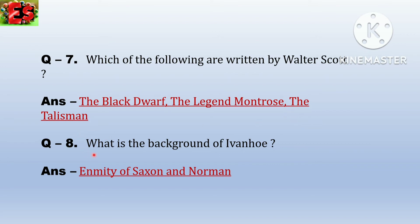Question number 8. What is the background of Ivanhoe? Ivanhoe's background is the enmity between Saxon and Norman people — the conflict and enmity between them.